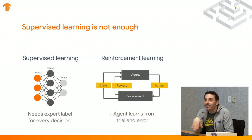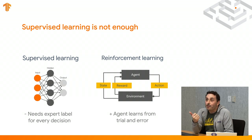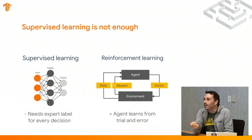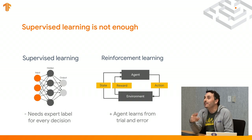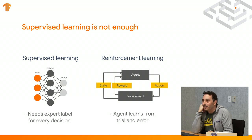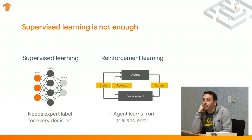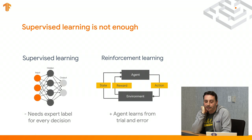In reinforcement learning, that doesn't happen. You're interacting with the game, you take a batch of actions, and you don't know which one was the right action and which was the wrong one. You only know the reward function — it tells you you're doing kind of okay or not doing that well. Based on that, you need to infer which actions to take to improve your reward. It's also a dynamic process.